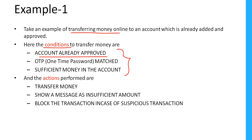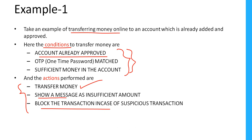The actions are: we can transfer the money, show a message of insufficient amount, or block the transaction in case of a suspicious transaction. For example, if the account is approved, OTP is matched, and sufficient money is available, we can transfer the money. If the account is approved but OTP is not matched, we block the transaction as a suspicious transaction.